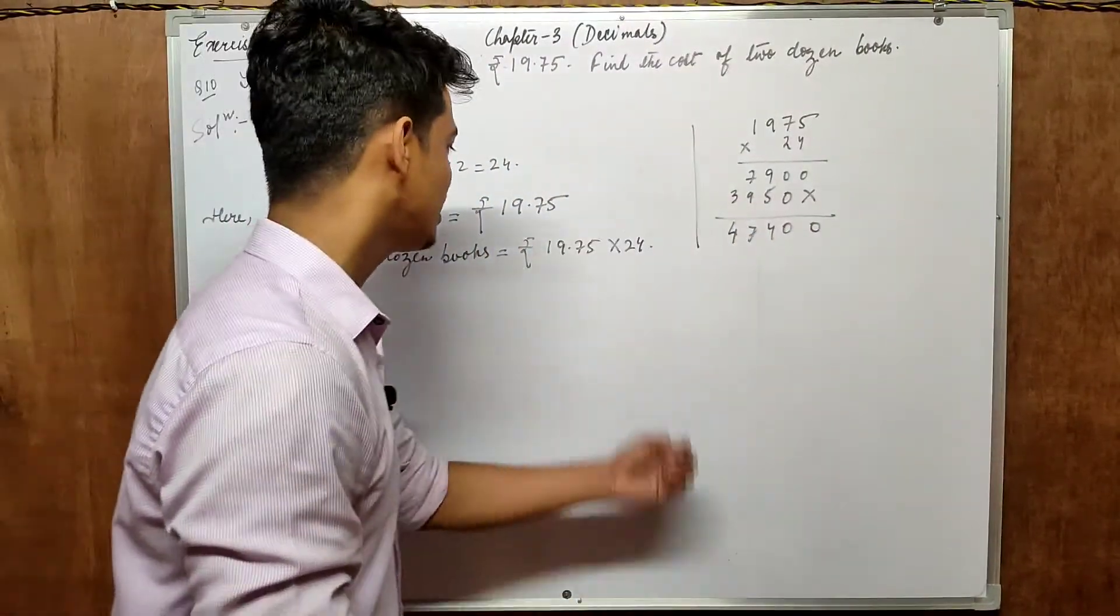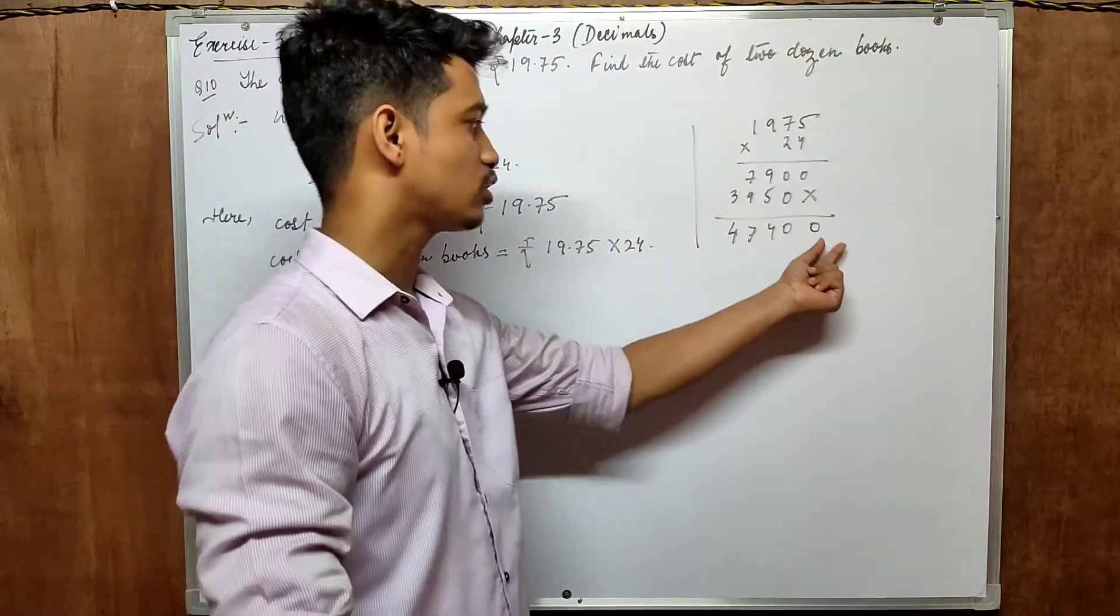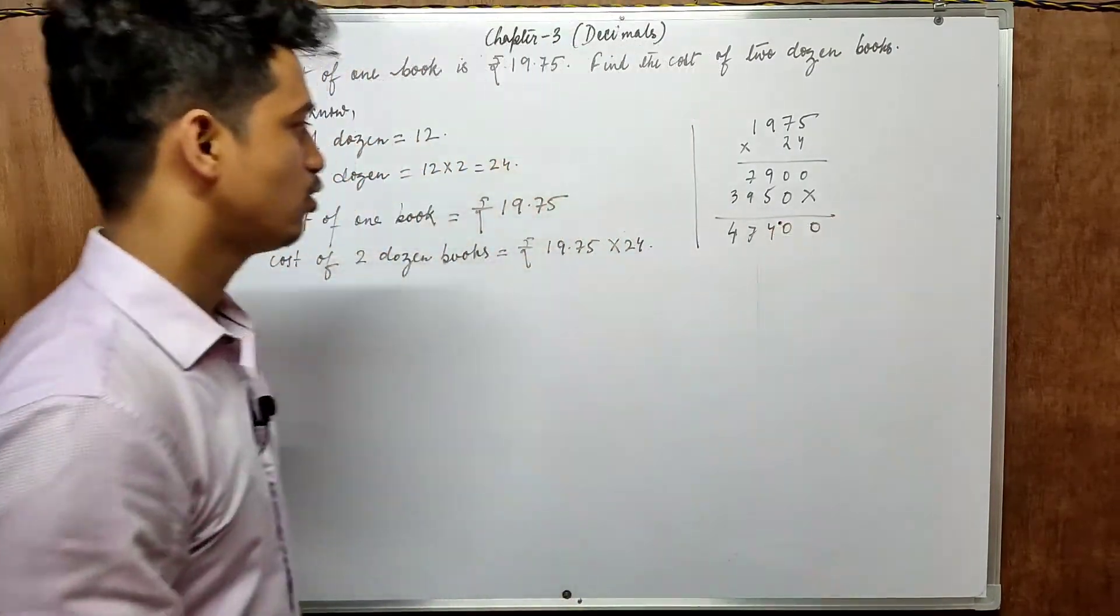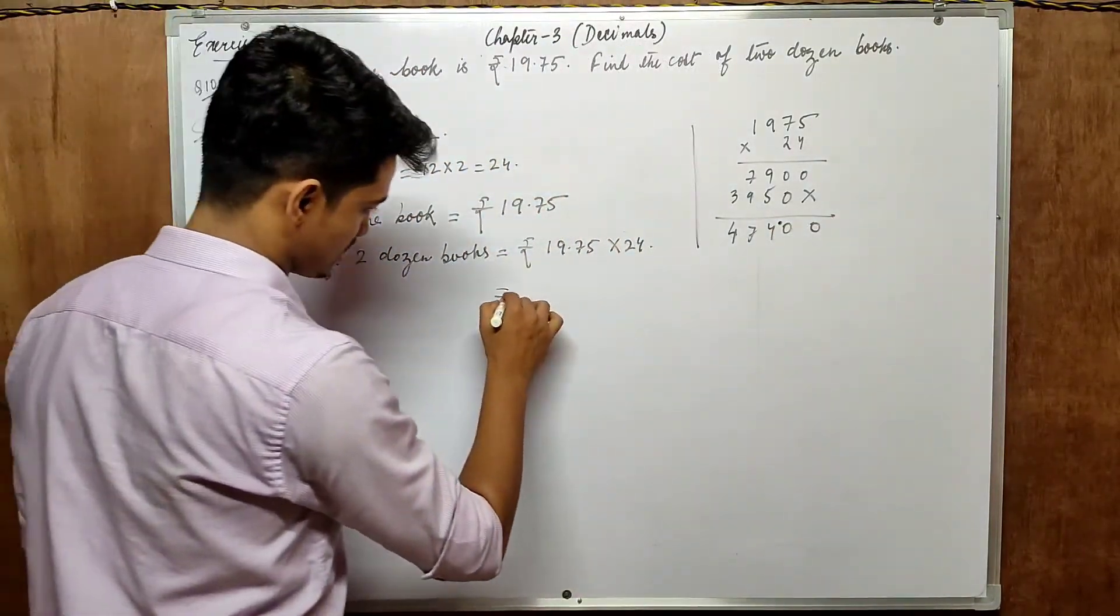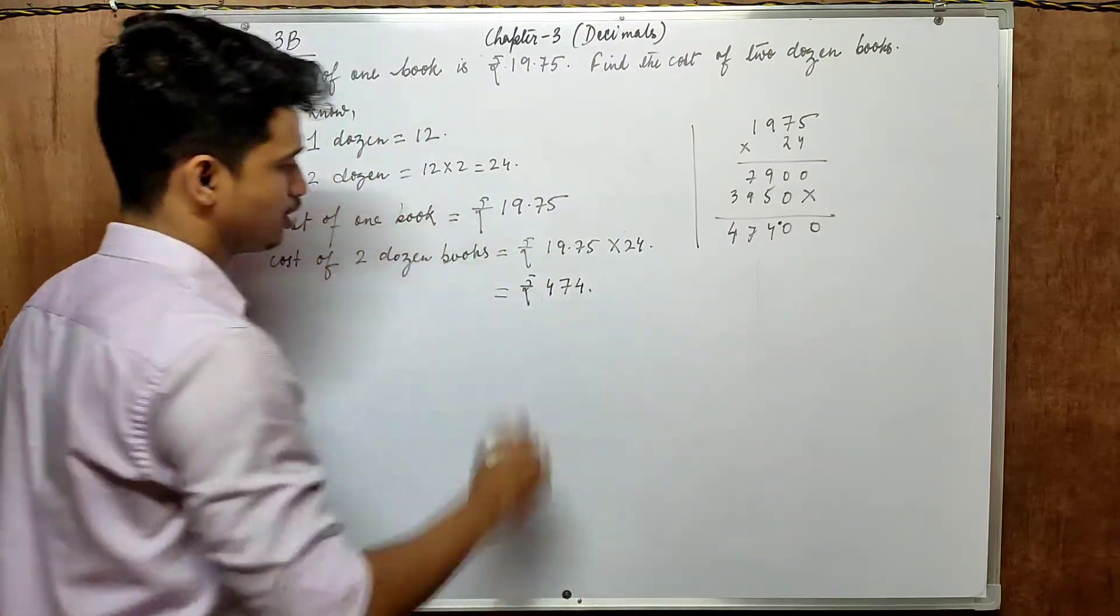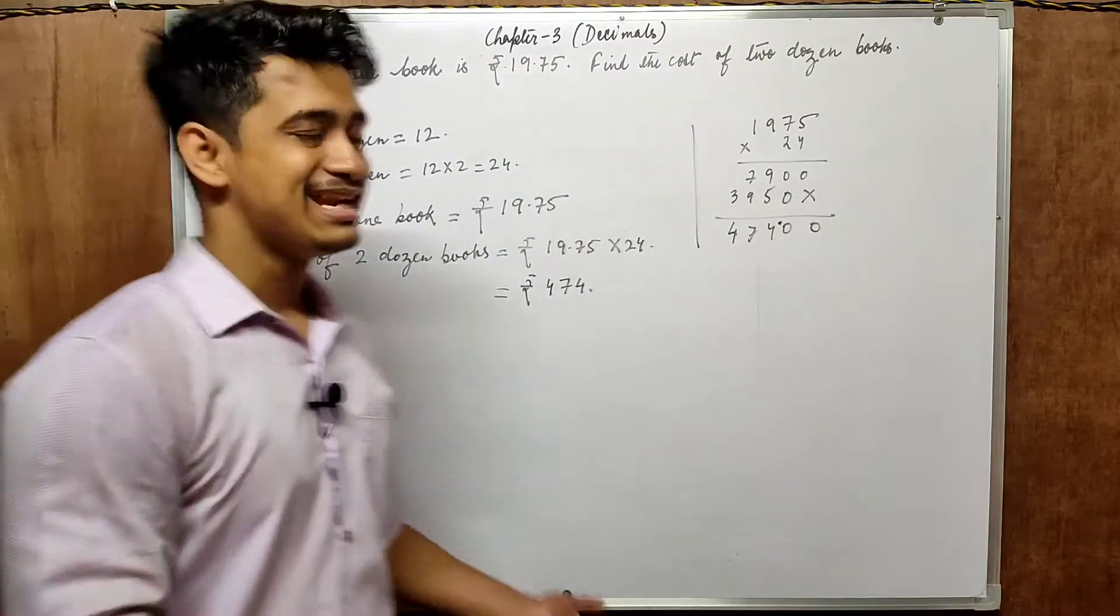And how many points will be there? After point there are two digits. So we need to count from the right. Put one point over here. So that means 4, 7, 4, points double 0. So basically the answer is 474 rupees. That's it. That's about question number 10. Very easy to do. I hope that you are getting what I am actually trying to say.